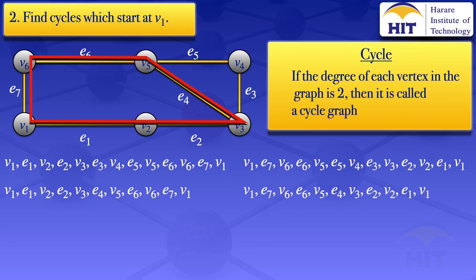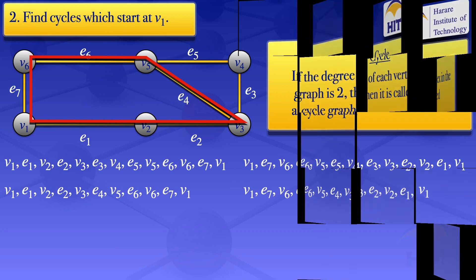So those are examples of cycles that are starting at v1.